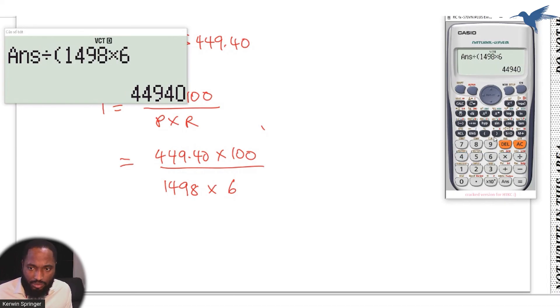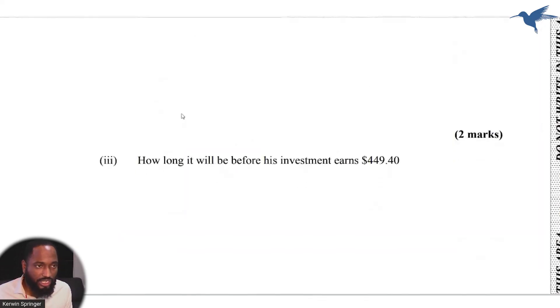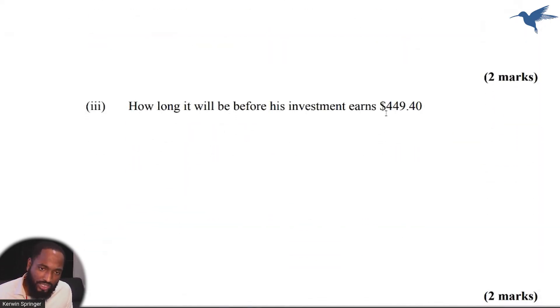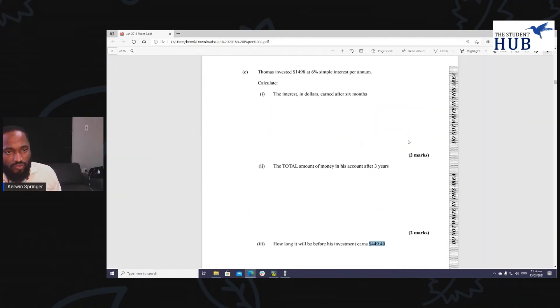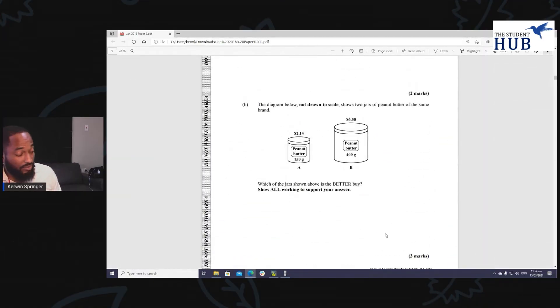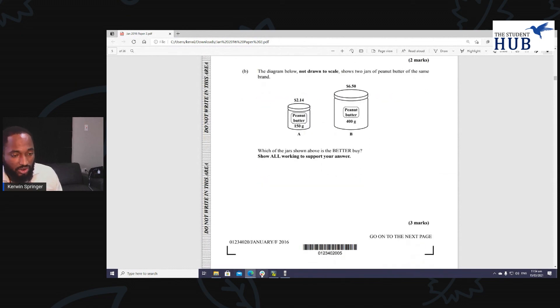Five exactly. Five. And since we are dealing with per annum, this is years. Five years. So it will take Thomas five years before his investment earns this amount of money. And just like that, you would have collected one, two, three, four, five, six, seven, eight, nine marks. So we collected our nine marks here. That's simple interest for you.